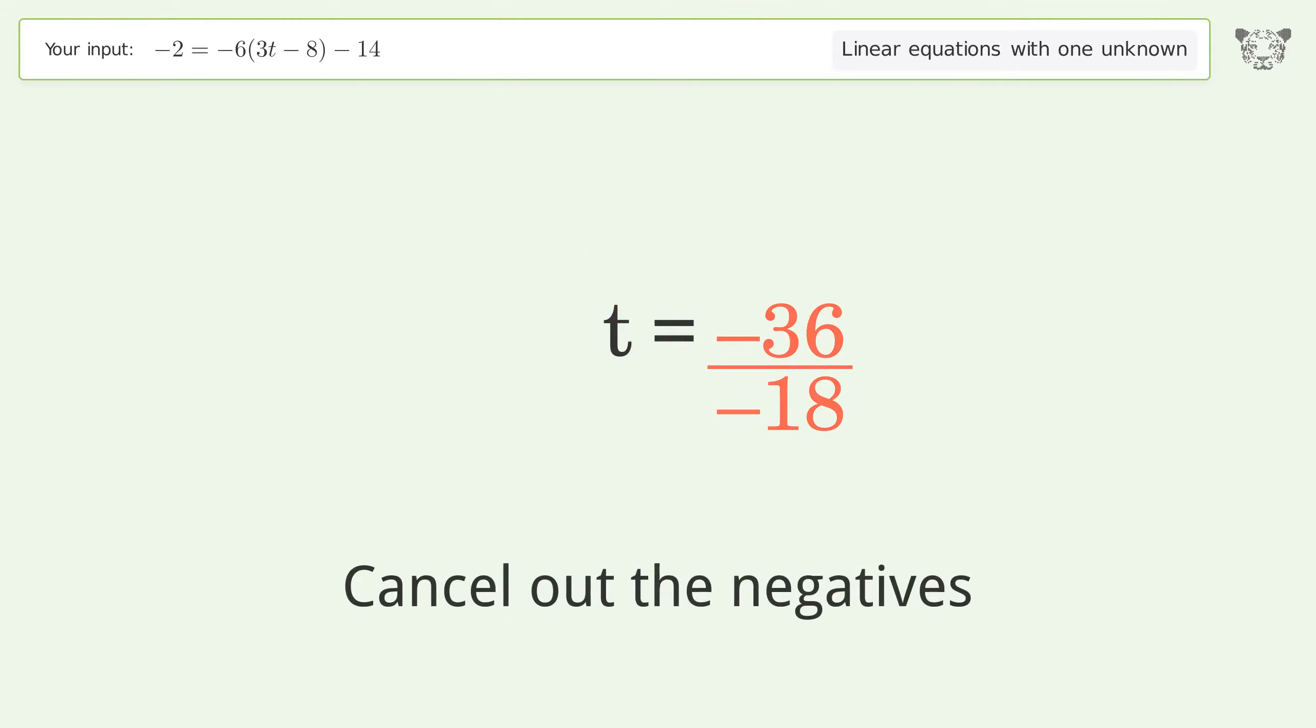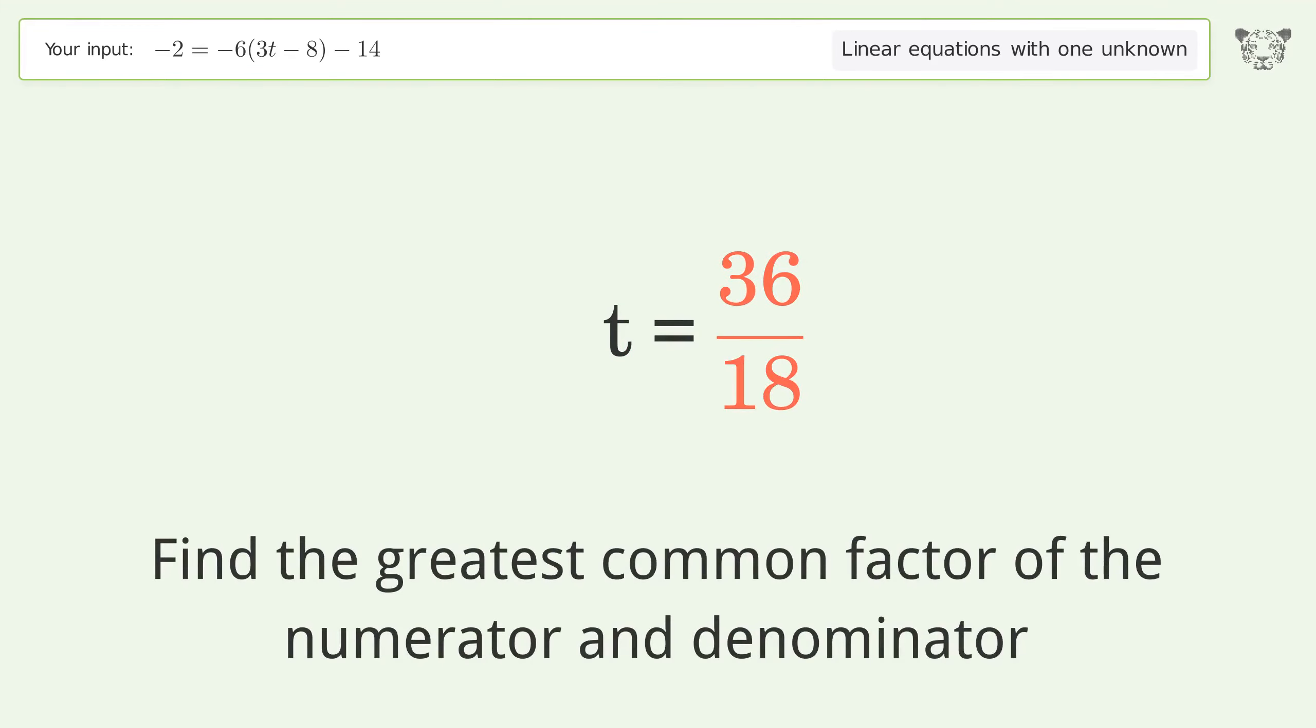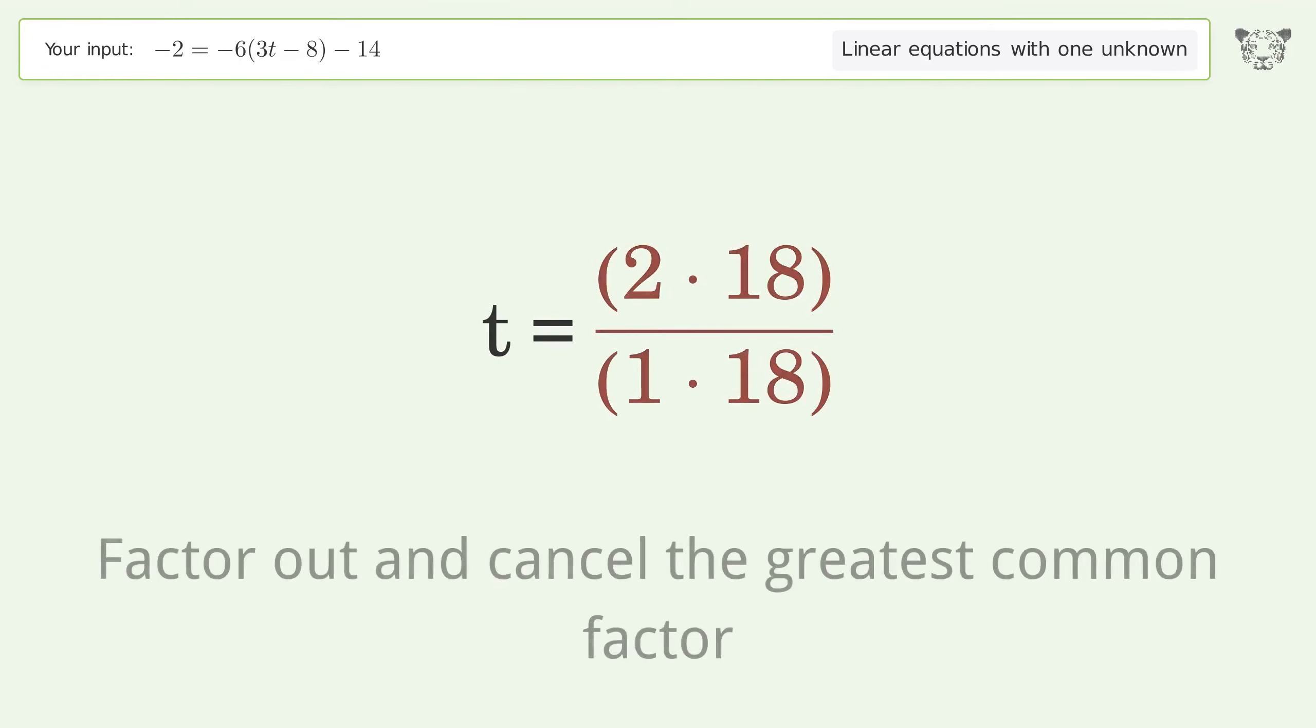Cancel out the negatives. Find the greatest common factor of the numerator and denominator. Factor out and cancel the greatest common factor.